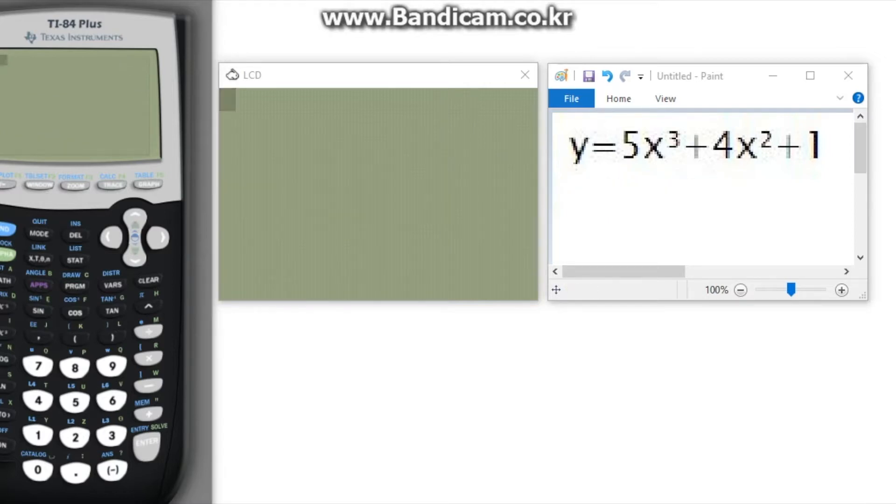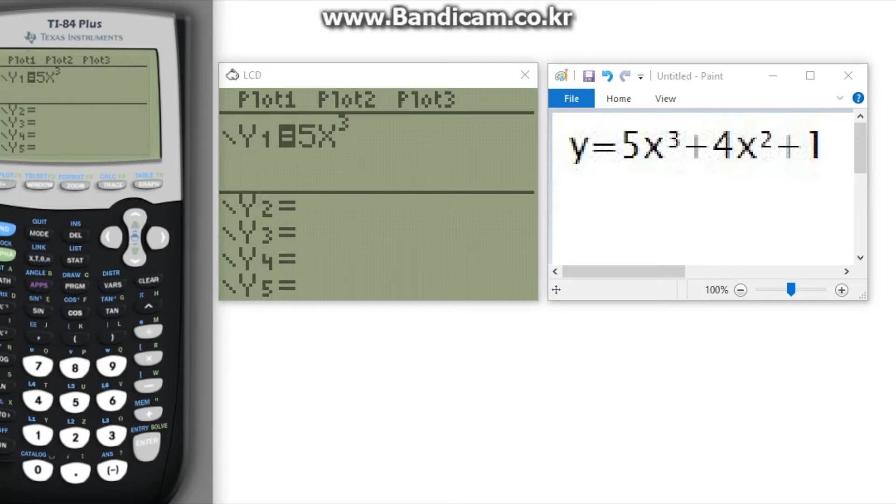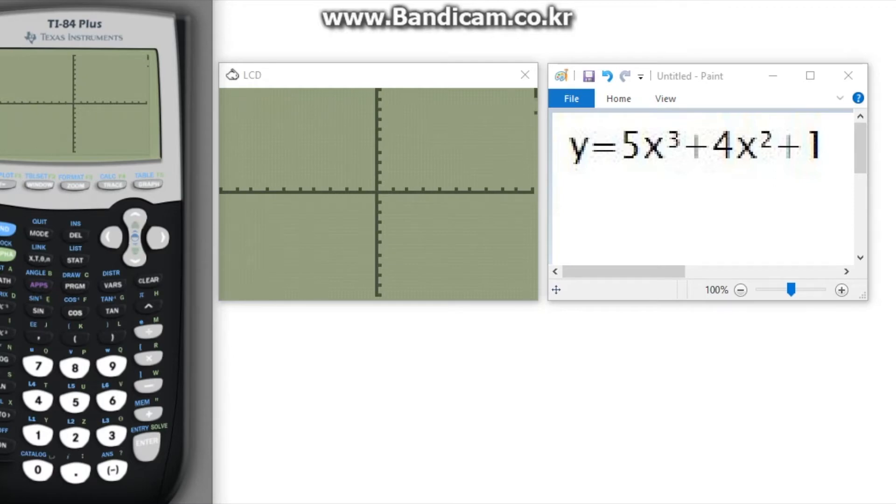For this example, we will be taking one of the given equations from the second example. Like we did when we found intersections, we will need to first graph the equation.